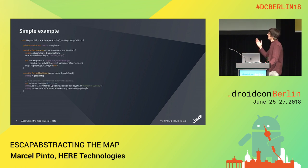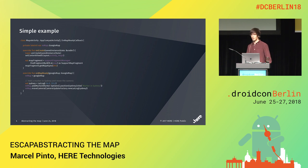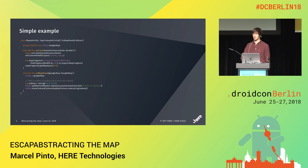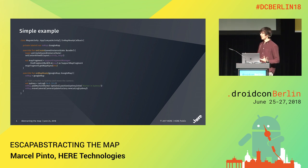This is actually what you see on the Google website when you go to introduce the Android maps. I just put it in Kotlin to make it a bit more readable. And it is simple, isn't it? You get your map fragment, you initialize it, you get the Google map object, you add the marker in Sydney and put the camera there. But we would never do this in our application — we'd like to apply some structure so the code is more testable.